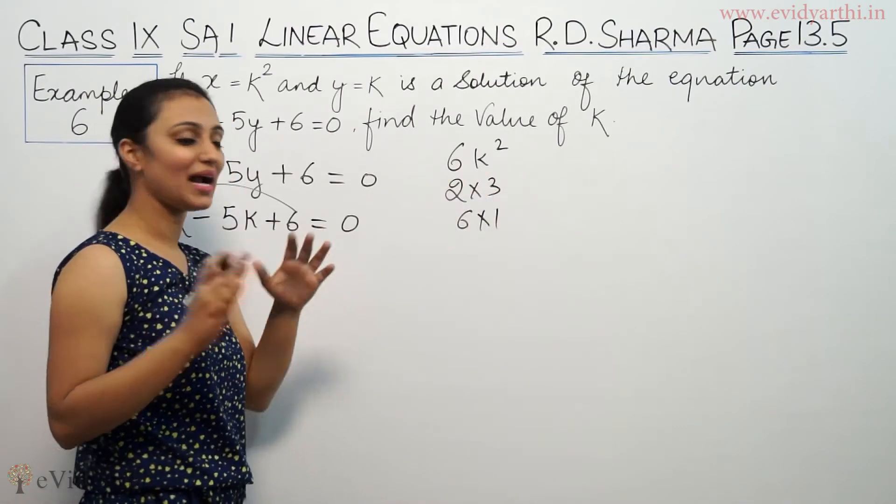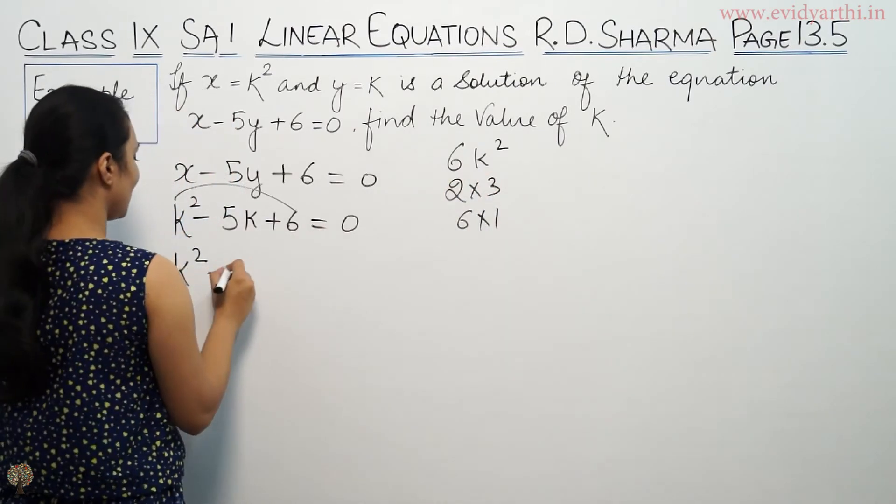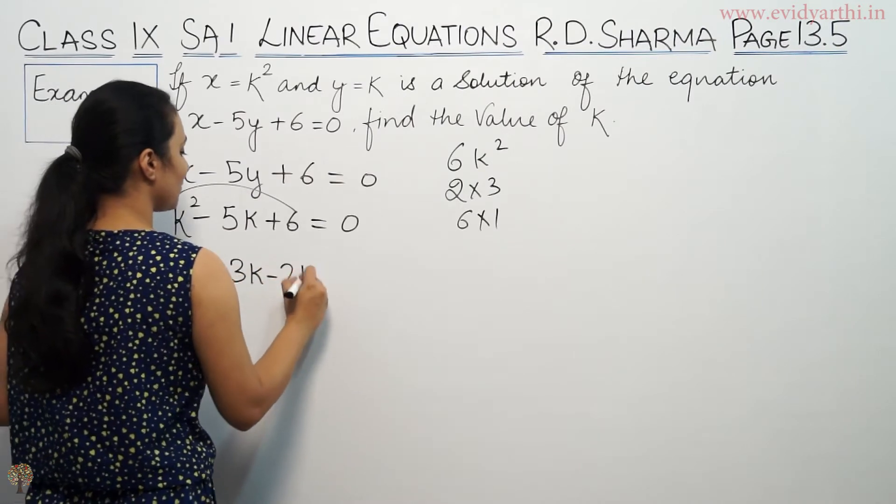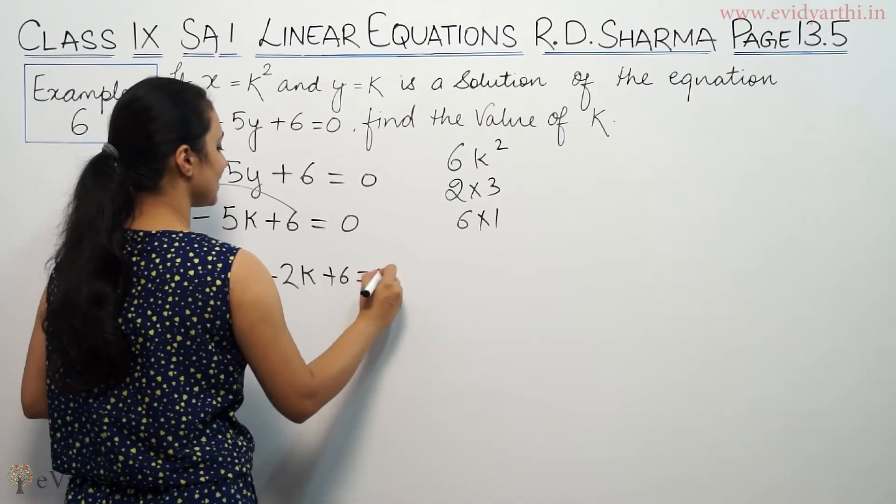But if we use 3 or 2, then we will add up. So, we will use minus 3k minus 2k plus 6 equals 0.